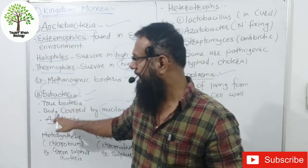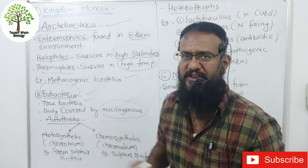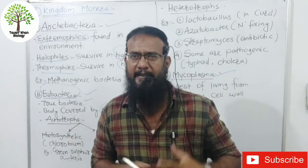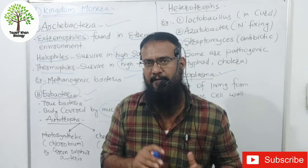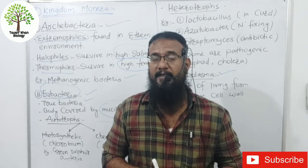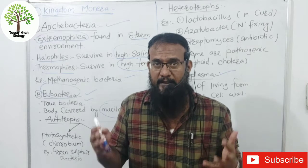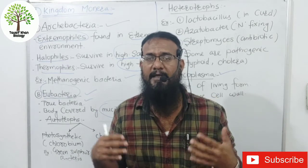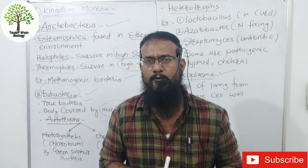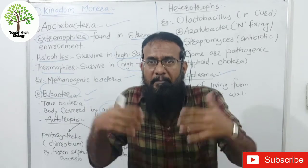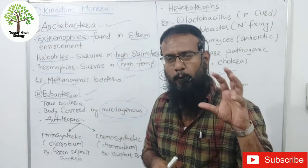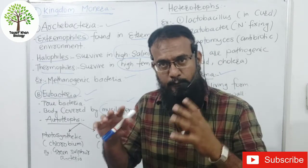One more thing about Eubacteria: these bacteria are covered by a musilaginous sheet. Eubacteria can be autotrophs or heterotrophs. Autotrophs do not depend on other organisms for their nutritional requirements — they prepare their own food material.